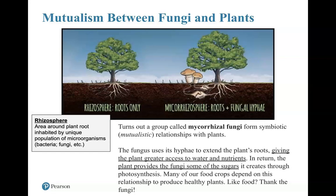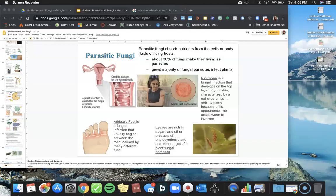This is important because many of our food crops depend on this mutualistic relationship. Some fungi, however, have a parasitic relationship — a positive-negative interaction where they benefit and the other species does not. About 30 percent of fungi make their living as parasites, and a great majority of these fungal parasites don't only infect humans — they can also infect plants.